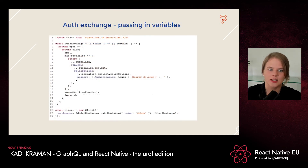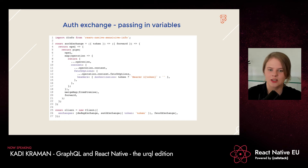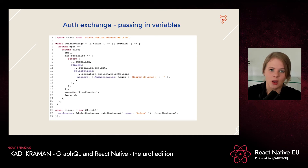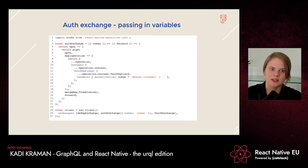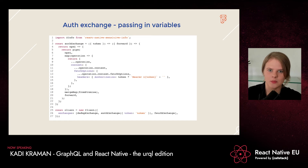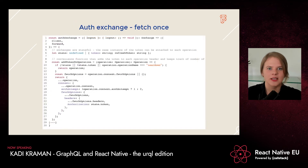The next thing I tried was fetching a token outside of the client creation and passing it into the auth exchange as a variable. This does work, but the problem is that when the token changes — for example, when the user's token has been invalidated and re-fetched — the client needs to be recreated, which means I'd lose all the cache that had accumulated.